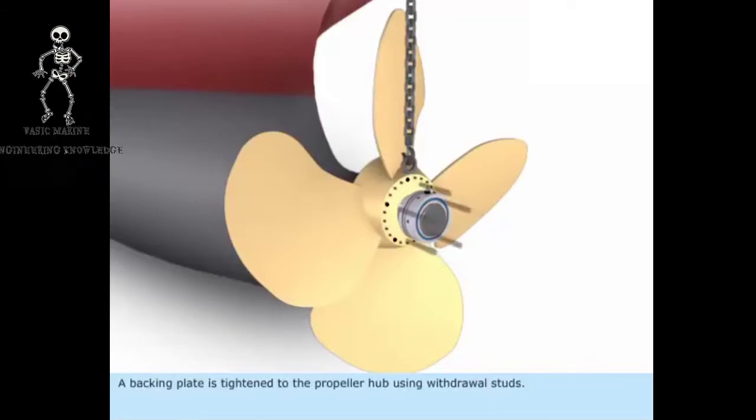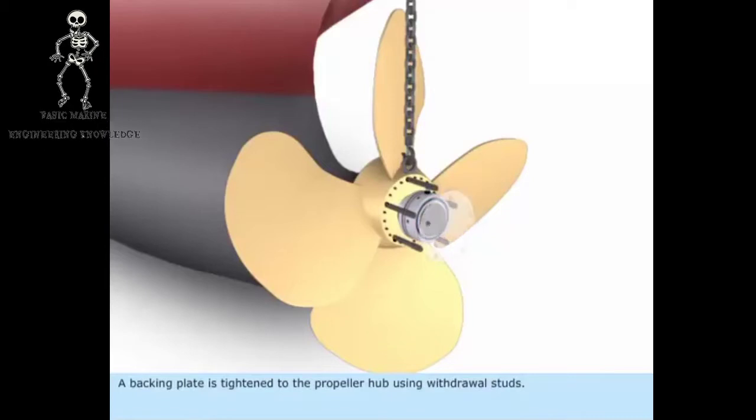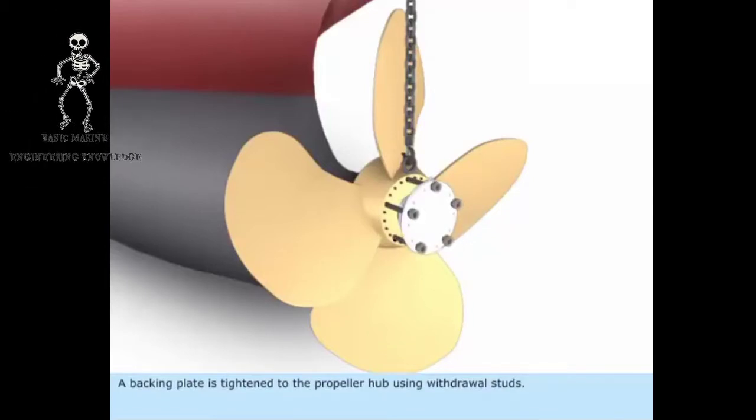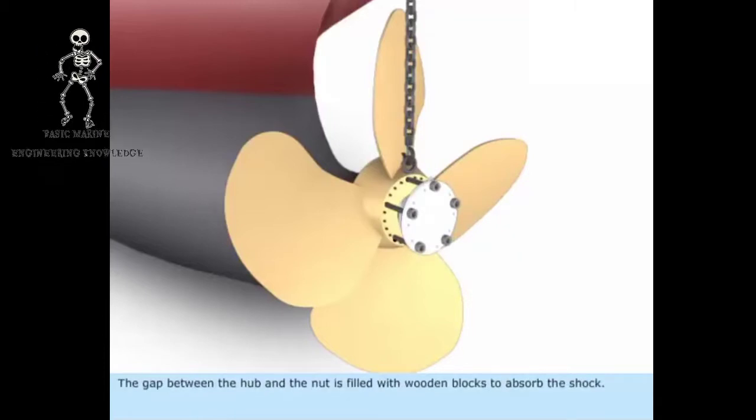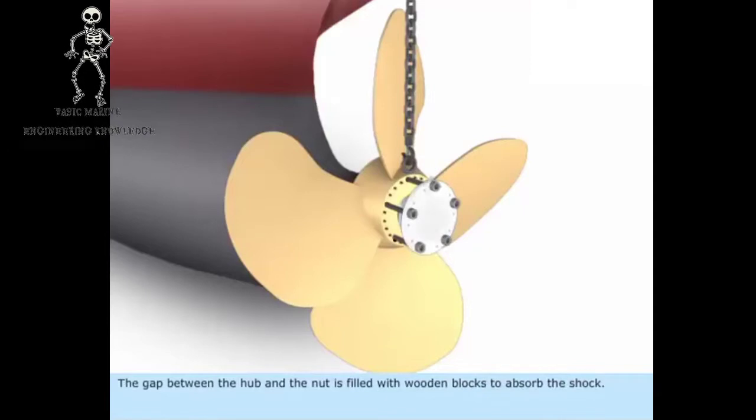A backing plate is tightened to the propeller hub using withdrawal studs. The gap between the hub and the nut is filled with wooden blocks to absorb the shock.